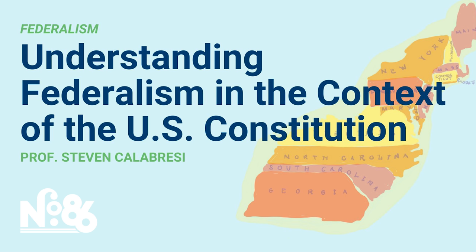The state governments in the United States are what are called governments of general jurisdiction. They have what Professor Richard Epstein sometimes calls the police power — the power to protect the public health, safety, and welfare. State governments can regulate people's activities in ways that the federal government lacks the enumerated power to do. The enumerated powers of the federal government have been read very broadly, in some cases perhaps too broadly, but the federal government nonetheless has a substantial amount of power.